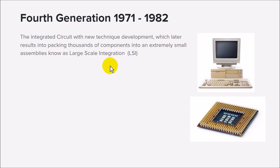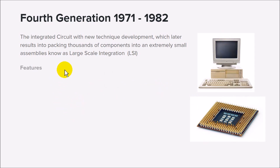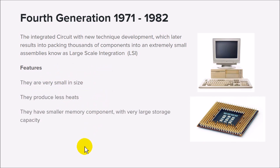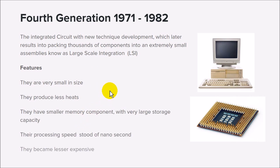The fourth generation, from 1971 to 1982, had similar features to the third generation but in a more improved way. This is when we started having better microprocessors using what is known as Large Scale Integration, meaning more instructions could be encoded and integrated onto a small chip. Features of the fourth generation include: very small size, less heat, improved technology, improved memory capacity, much faster speeds, and lower cost — computers started entering homes.